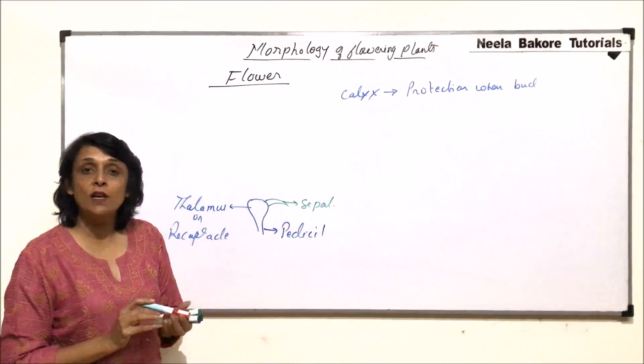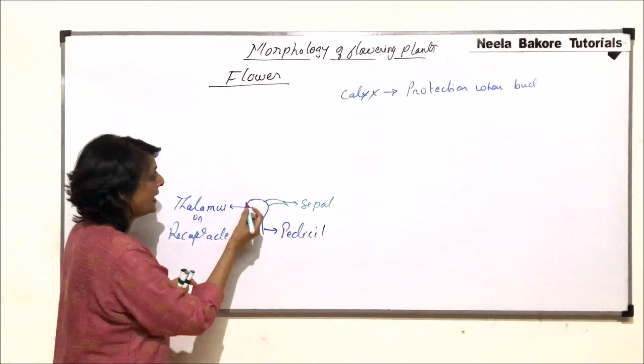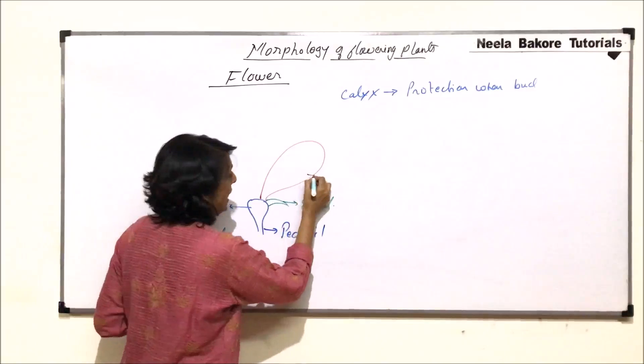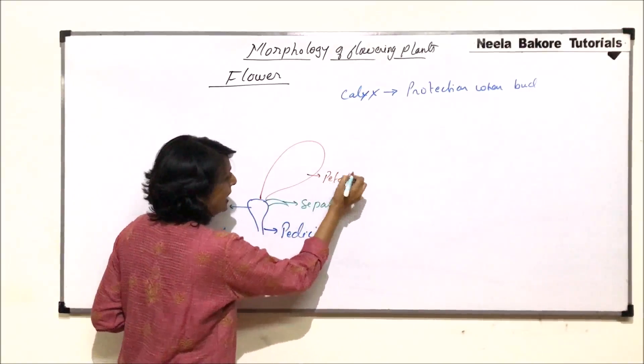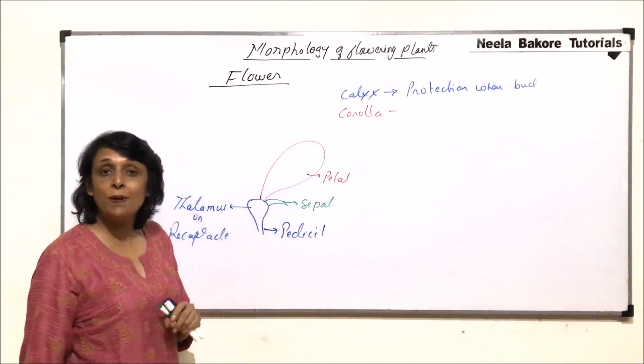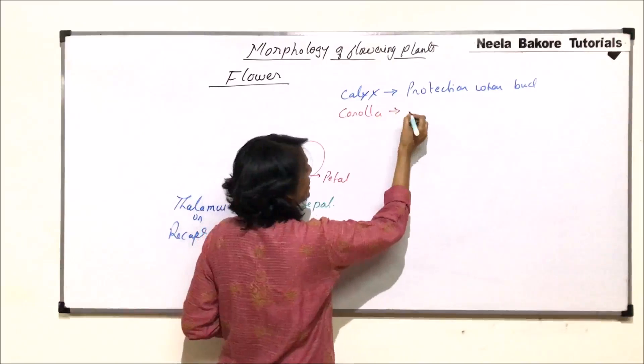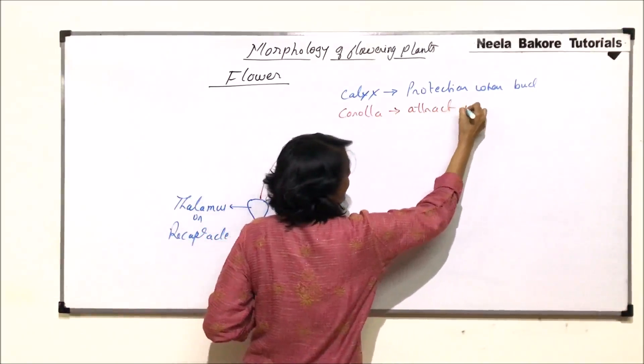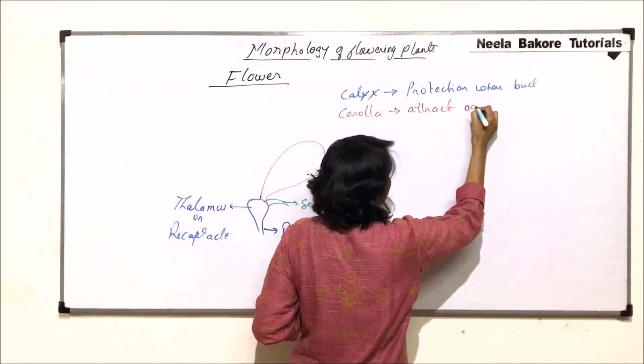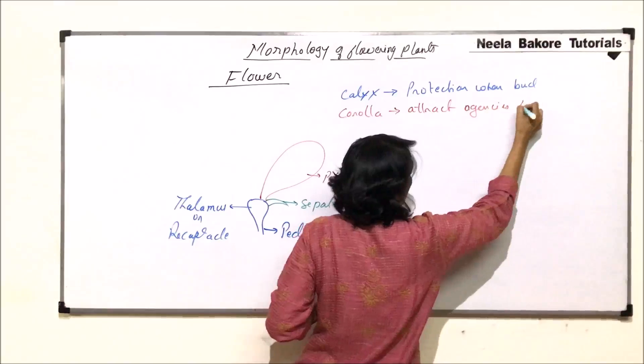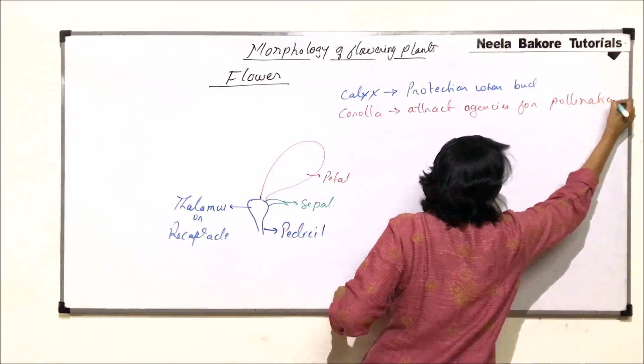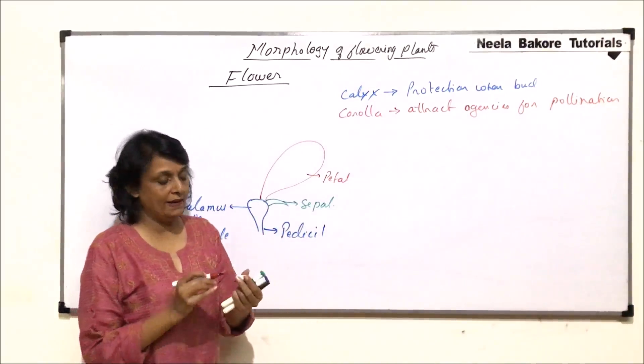Then comes the next whorl, inner to sepals and it is normally made up of brightly colored structures. Individual is known as a petal and the whorl is called the corolla. Corolla is normally brightly colored and its function is to attract agencies, insects or birds for pollination. And that is why the petals are brightly colored.